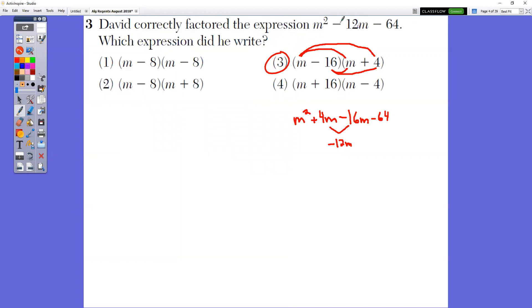Which one correctly factors this expression? You just have to do double distributive property or FOIL. First, outers, inners, last. Make sure you add together your outers and your inners. 4M plus negative 16M is a negative 12M, which matches our original one, choice three.